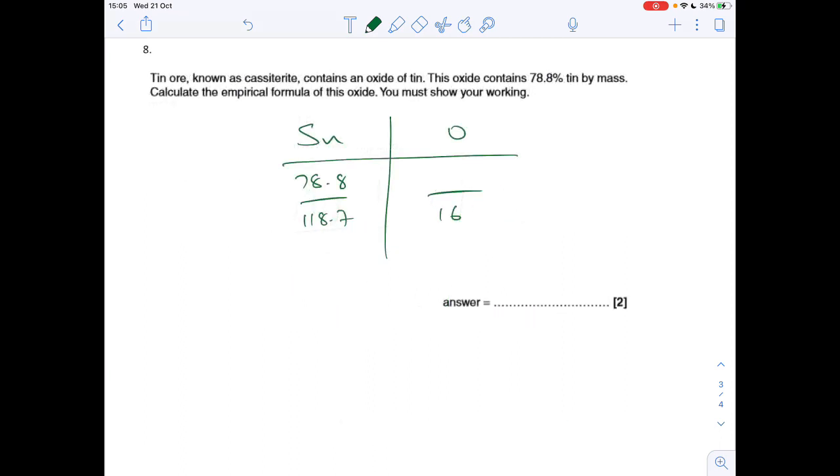Question 8, another empirical formula question. This one is giving us the percentage of tin by mass only. Well, the percentage of oxygen is obviously going to be the difference between 100 and 78.8, so that's 21.2. Method's same as before. So moles of tin, we get 0.664 and 1.325 there. Divide by the smallest, we get 1 to 1.995. So the reason I've chosen this question is because when you've got a number like that, that's so close to a whole number, we're allowed to just round that up to 2. So this empirical formula is SnO2.